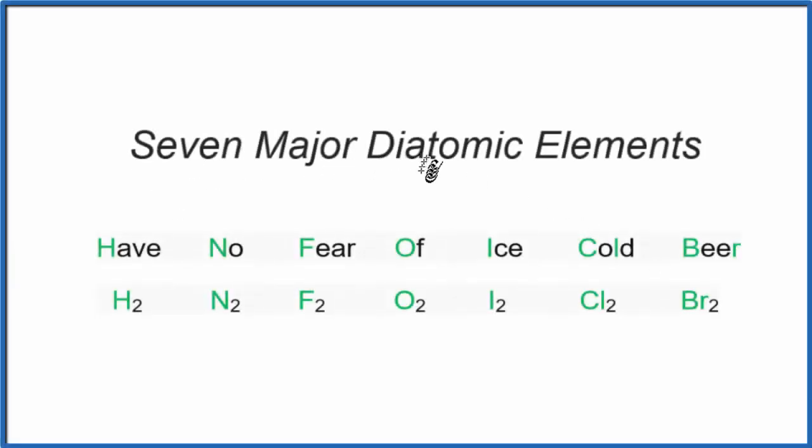In chemistry, there are seven major diatomic elements. Di, that means two, so each one of these has two of them, and then atoms, atomics. So we have two atoms in each of these seven major diatomic elements.